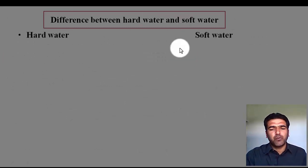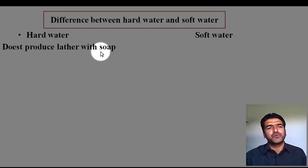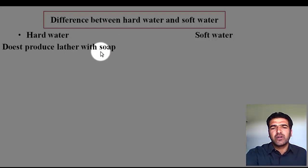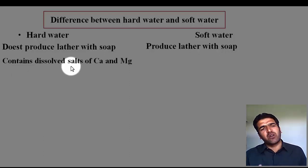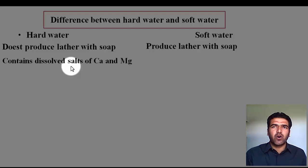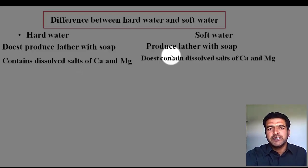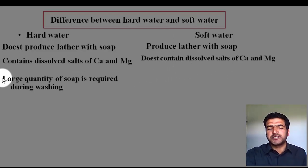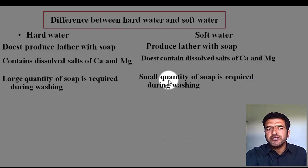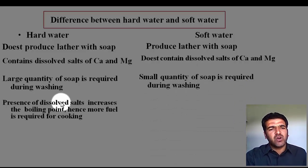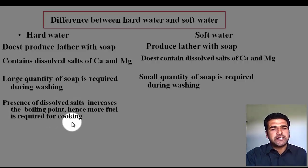So what is the difference between hard and soft water? Point one: hard water does not produce lather with soap — it produces no foam or less foam. Soft water produces good foam with soap. Point two: hardness of water is due to dissolved salts of calcium and magnesium — bicarbonates, sulfates, and chlorides — whereas soft water does not contain dissolved salts of calcium and magnesium. Point three: a large quantity of soap is required for washing with hard water, because part of the soap is trapped by calcium and magnesium salts and precipitates. Soft water requires only a small quantity of soap. Also, dissolved salts increase the boiling point, so more fuel is needed for cooking with hard water, whereas less fuel is required with soft water.